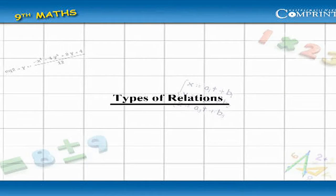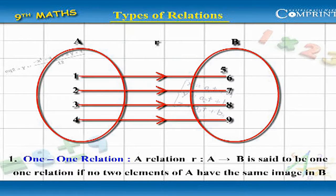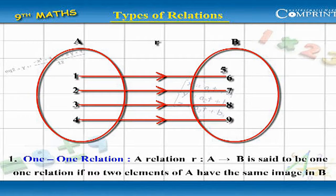Types of Relations. 1-1 Relation: A relation from A to B is said to be a 1-1 relation if no two elements of A have the same image in B.